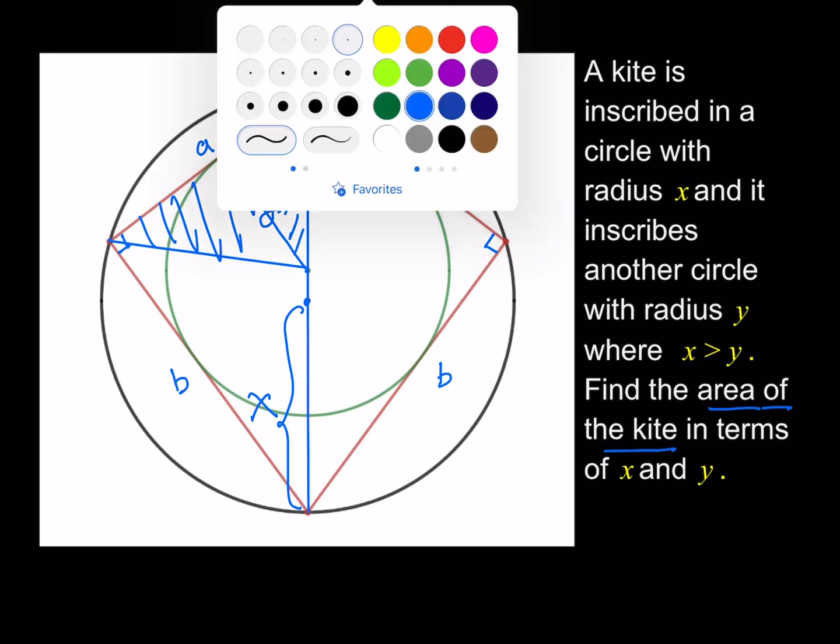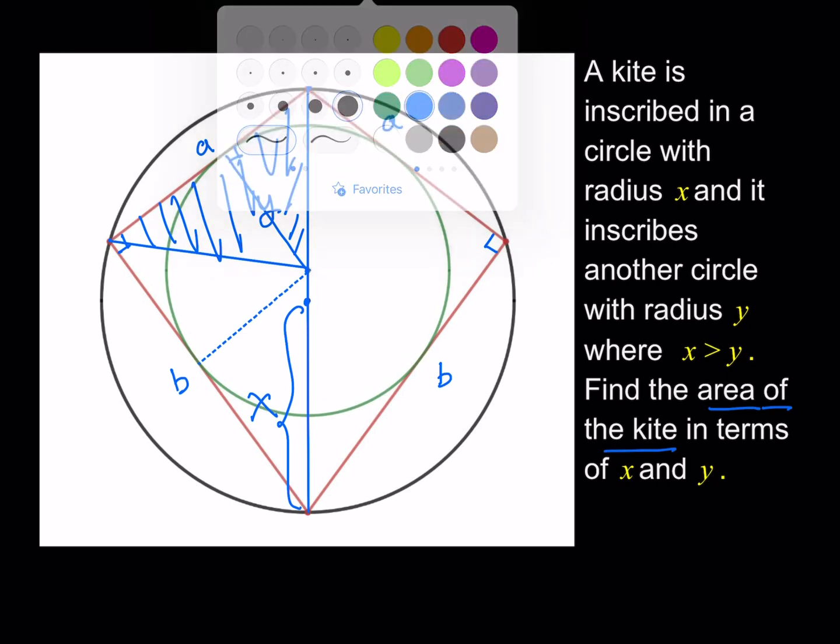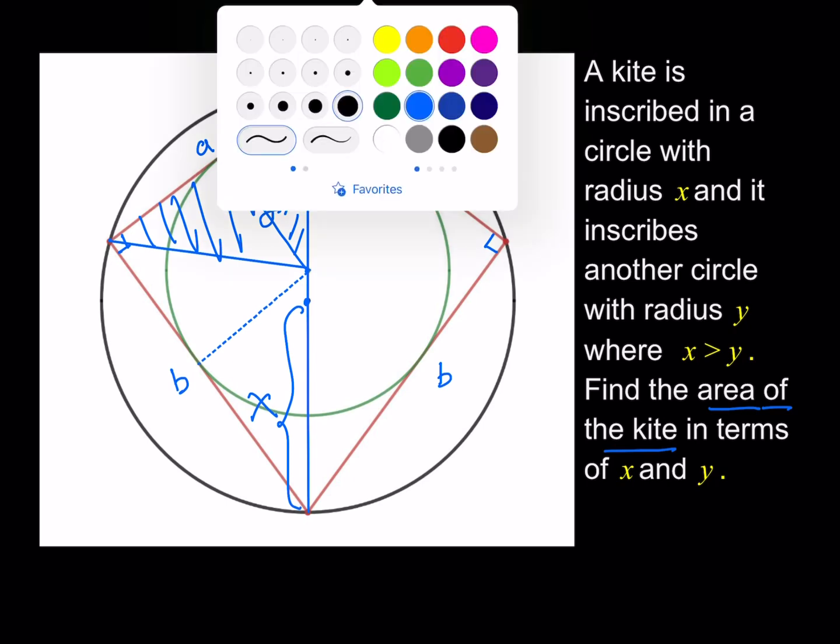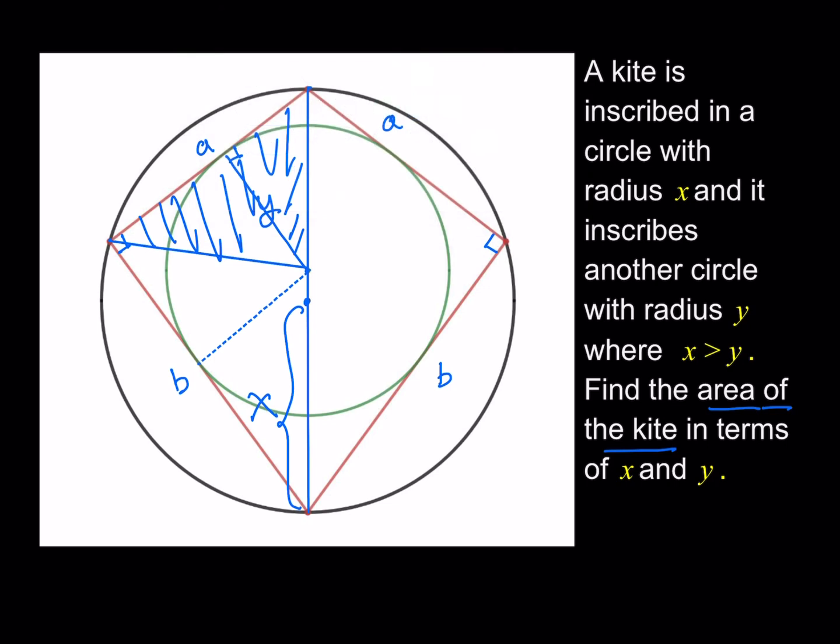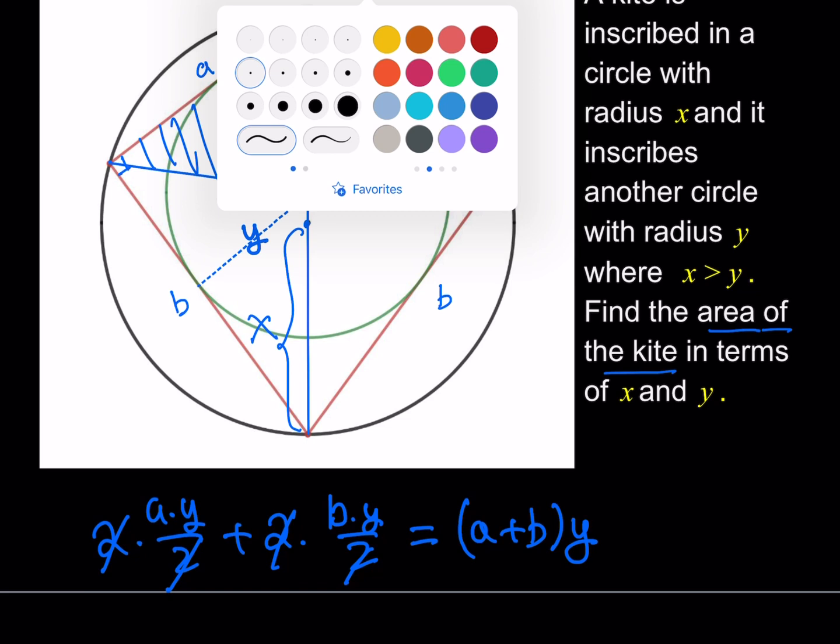All together, we can actually find the area of each one. This is also going to be the radius of the smaller circle, which is y. This also gives me the area of this triangle. What is the area of these triangles then? It's base times height divided by 2, so you're going to be getting A times y divided by 2, and then 2 times that, and then you get 2 times B times y divided by 2. And you can go ahead and simplify this, and you're going to be getting Ay plus By, which is (A + B) times y. Let's go ahead and proceed with this information.